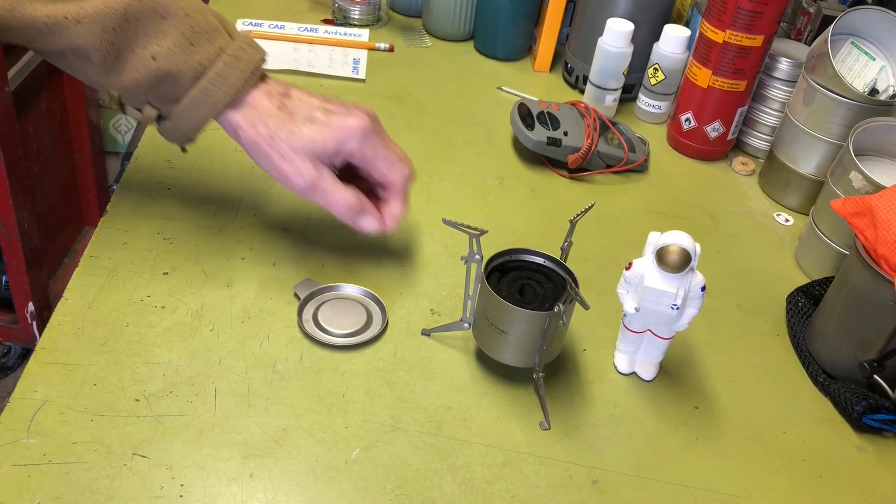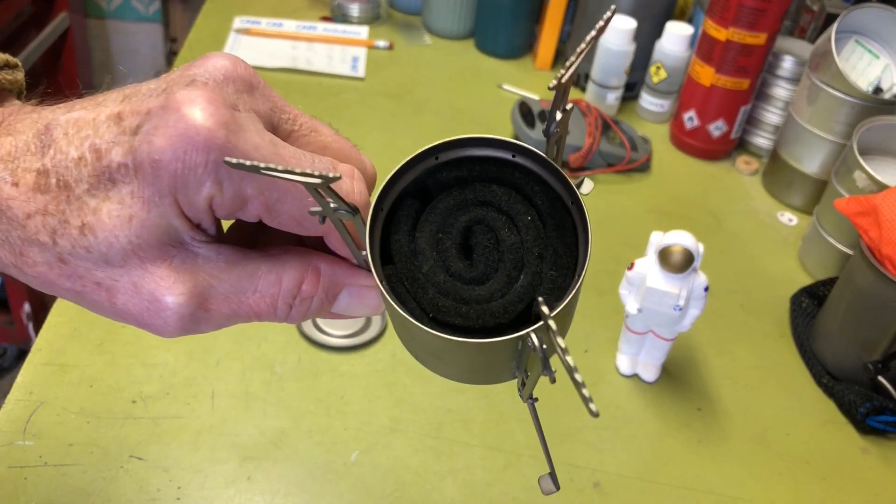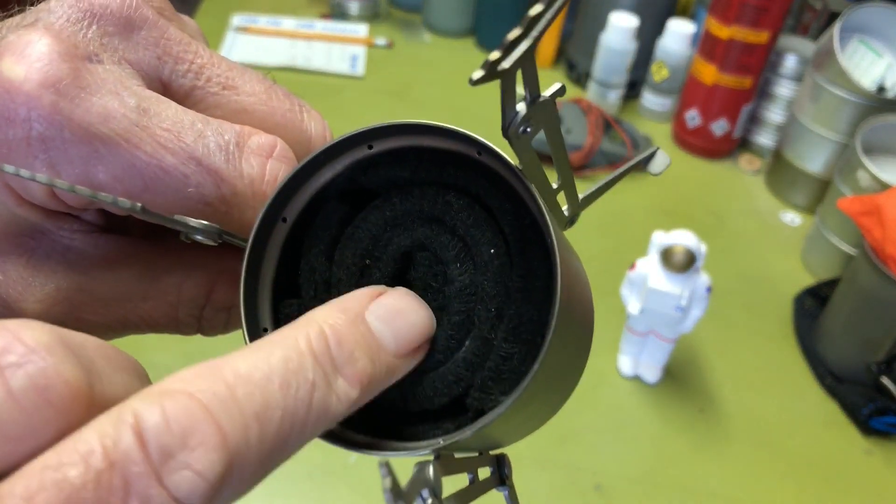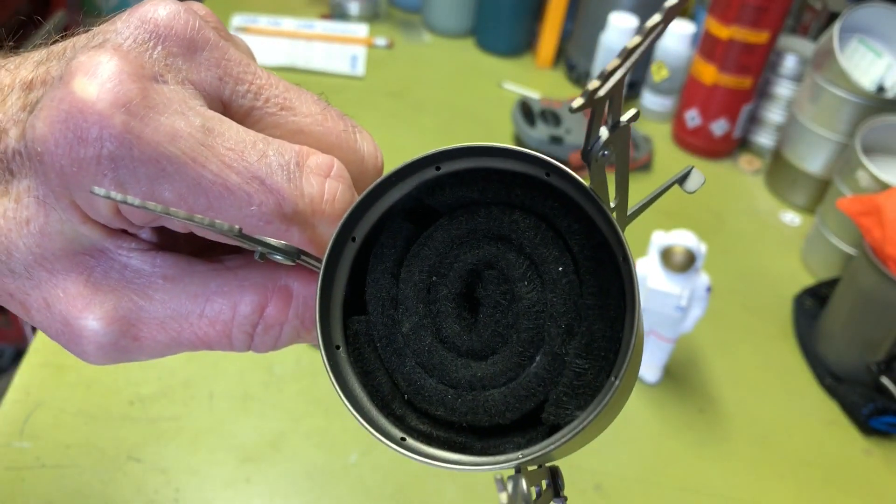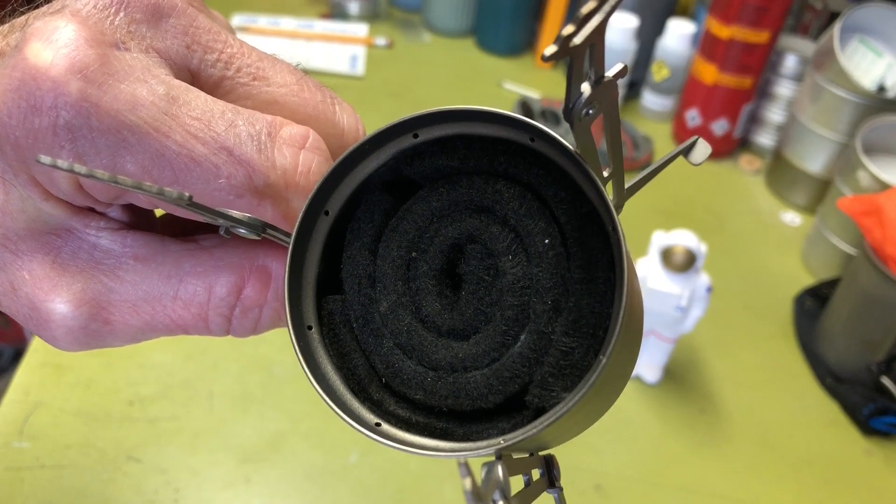Hi all, Planetside Agent here. Today we're going to take a look at the Moonlander alcohol stove using carbon felt in the burner cup and check on performance. So if you're interested, stay tuned.